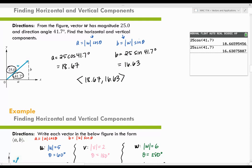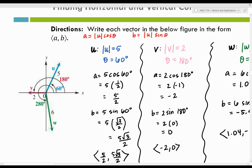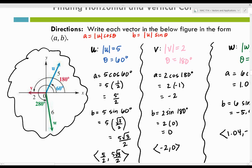Let's try that on more vectors. This time they gave us a figure and want us to find the vertical and horizontal components for each vector. The colors in the figure match each vector. For vector U, the magnitude is 5 and the direction angle is 60 degrees — the colors align. The formula is still A equals the magnitude times cosine of the direction angle, and B equals the magnitude times the sine of the direction angle.